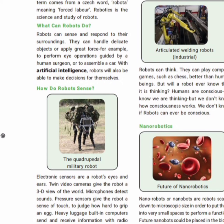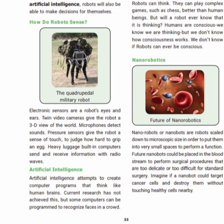Next, we will see about the science topic — robots. Robots are automatic machines that can perform mechanical and repetitive jobs faster. With artificial intelligence, robots are able to make decisions for themselves. This is how advanced robots have become — they use artificial intelligence to make decisions.